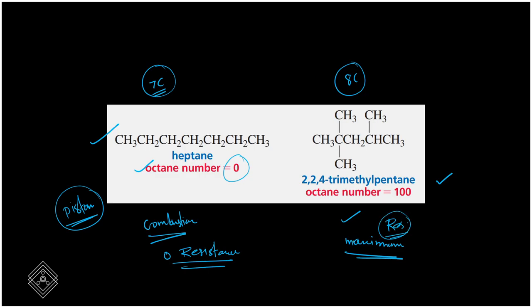In case of 2,2,4-trimethylpentane, the energy required is very high - that is maximum resistance. Normally fuel is a mixture of multiple different alkanes. So what do we do? In this case, the energy required is compared to these two reference compounds. Let's say a fuel X has certain energy release.